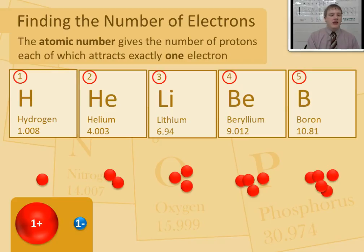Hydrogen has one proton. It will attract one electron. Helium has two protons, which will attract two electrons. Lithium, 3. Beryllium, 4. And boron, 5.